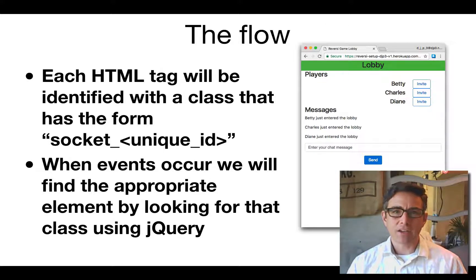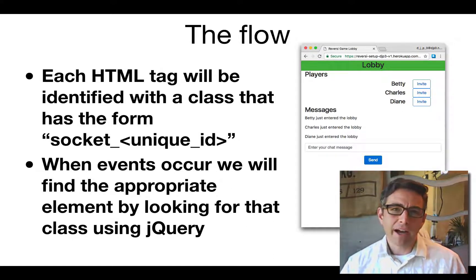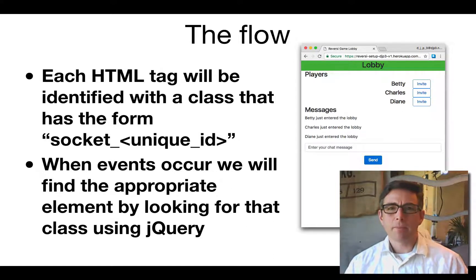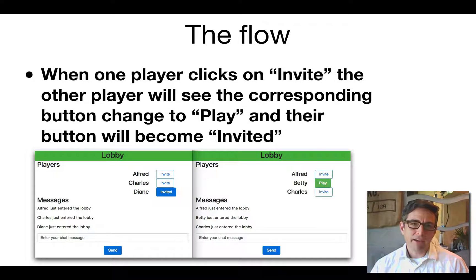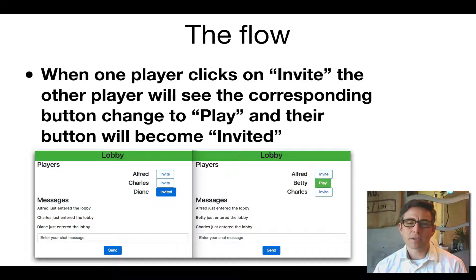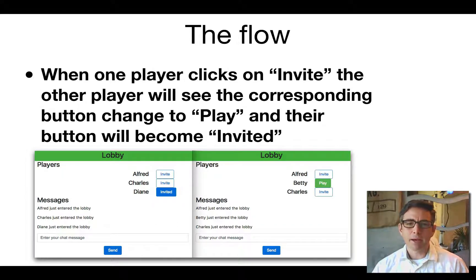Socket IDs are consistent across all clients in the same room. When events occur, we find the appropriate elements by class using jQuery, so we can produce effects like when one player clicks invite, the other player sees their button change from invite to play, while the person who clicked goes from invite to invited.